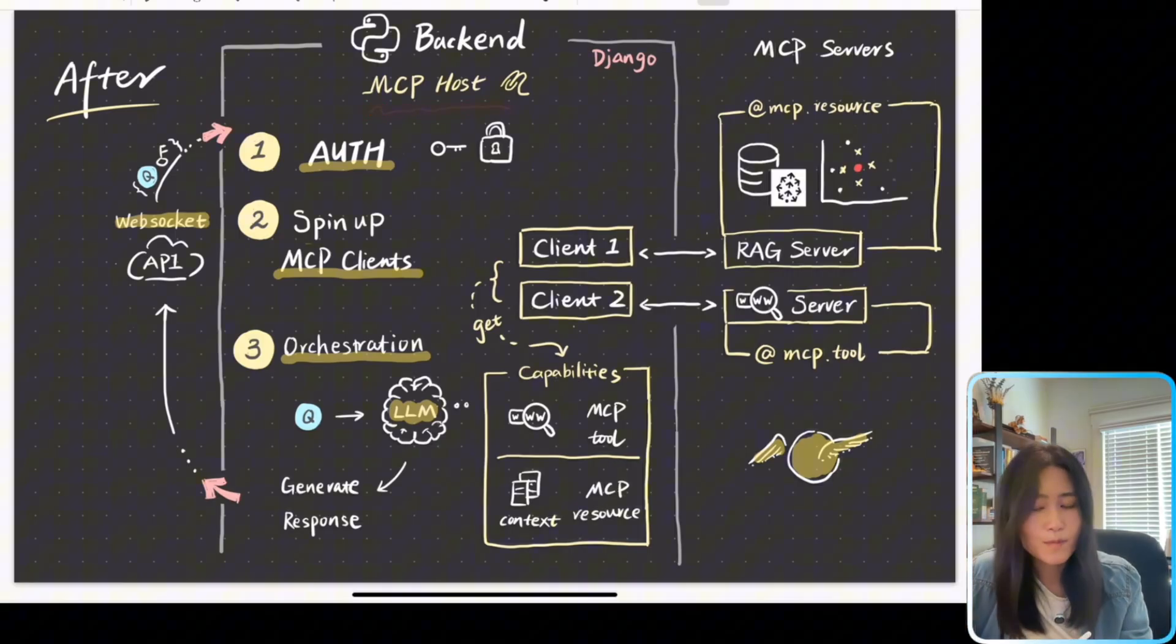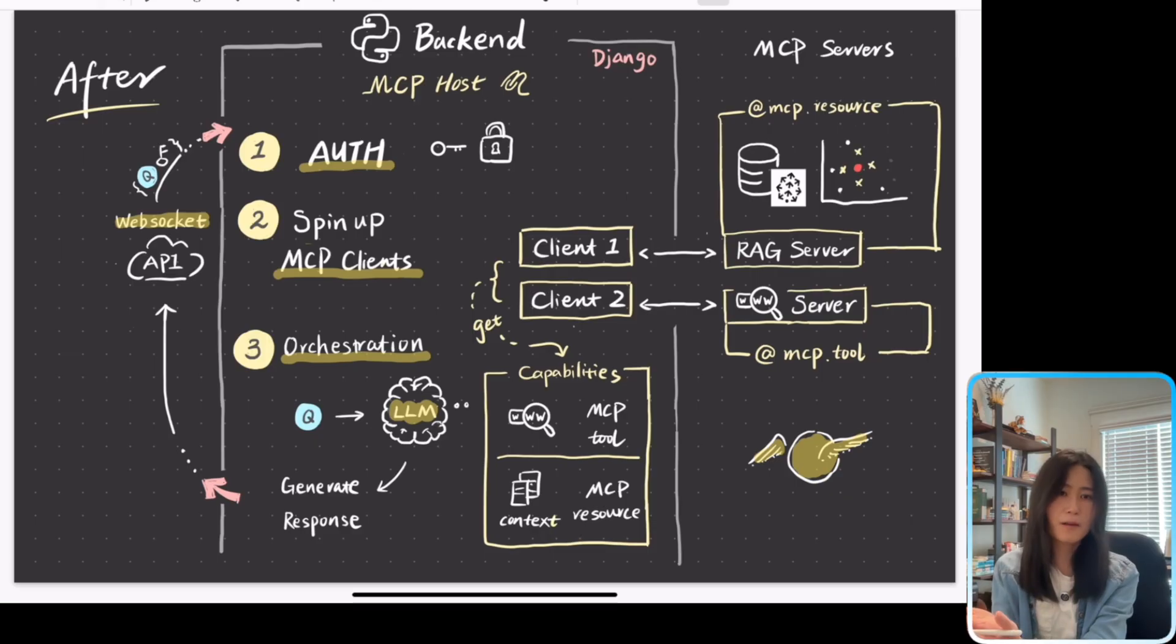Step two is new. We're going to be a nice MCP host. We will spin up MCP clients and the number of MCP clients you are going to spin up is equal to the number of MCP servers. And because what the MCP client does is the client is going to send a request to the MCP server and asking, what can you do? And MCP server is going to say, here's my capabilities.